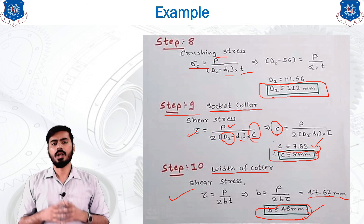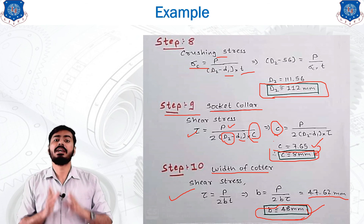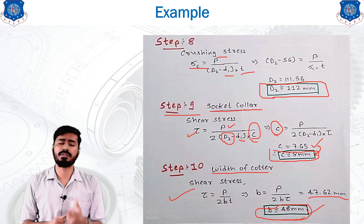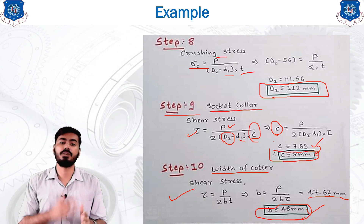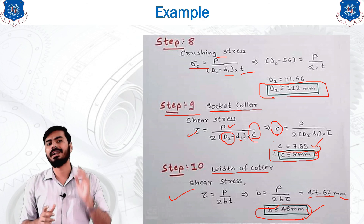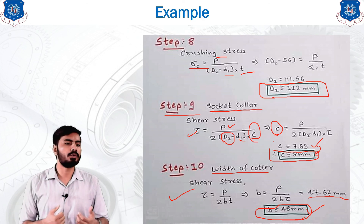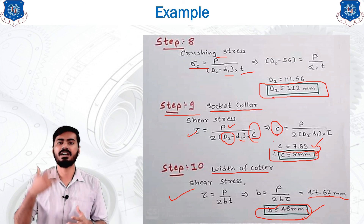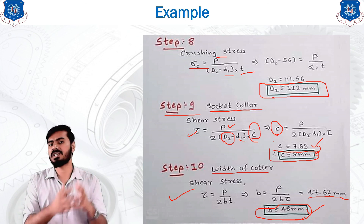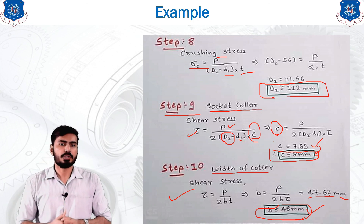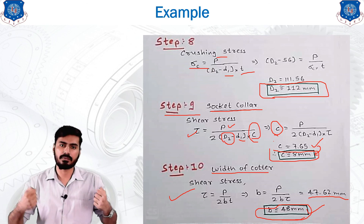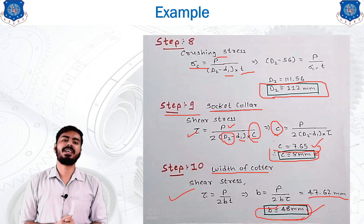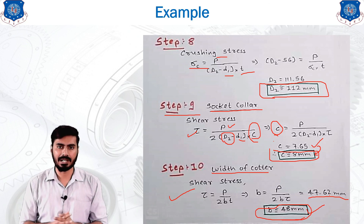This was the basic example of the cotter joint, completely solved using the design procedure. If you know the design procedure, the theory, and each area of the cotter joint, you will be able to solve this example without memorizing. You do not have to memorize each equation or procedure step — you just need to understand the definitions, dimensions, and concepts of each stress that develops during the working condition of the cotter joint. Thank you.